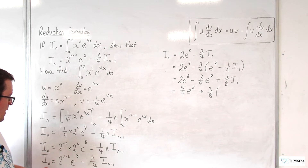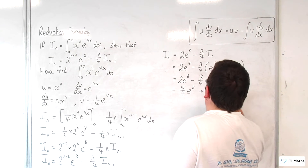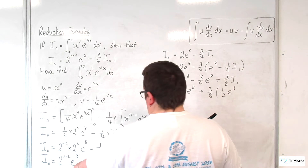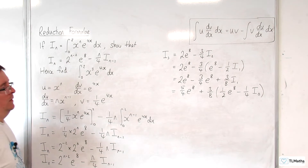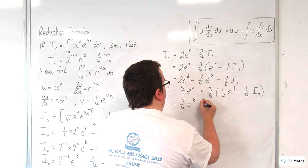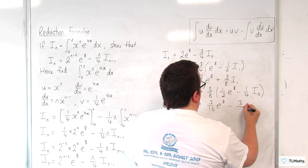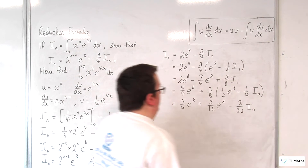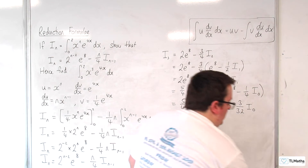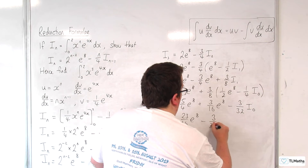Now, for I1, substituting in n equals 1: 2 to the power of 1 minus 2 is 2 to the power of minus 1, which is 1 half, times e to the 8, take away 1 quarter of I0. So continuing to simplify: 5 quarters e to the 8 plus 3 sixteenths e to the 8, then take away 3 over 32 times I0. Working out 5 quarters plus 3 sixteenths gives 23 sixteenths. So we have 23 sixteenths e to the 8 take away 3 over 32 times I0.